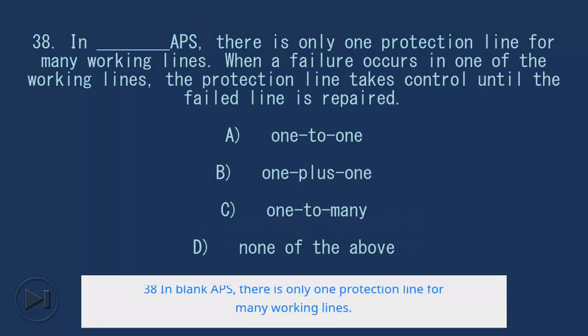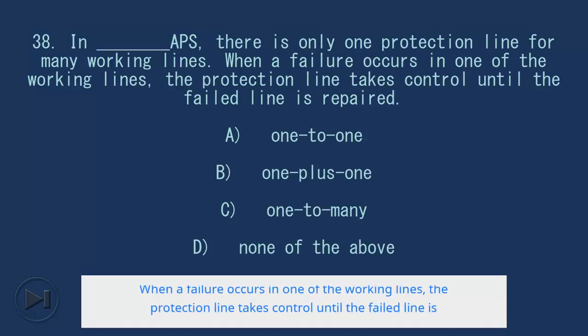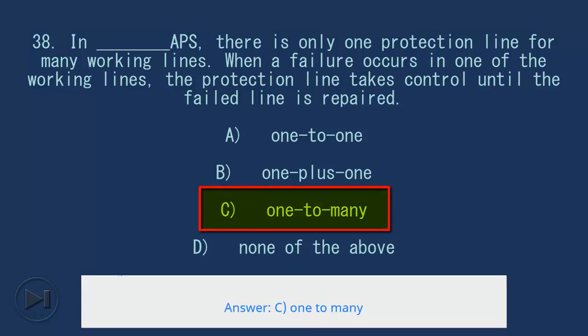38. In blank APS, there is only one protection line for many working lines. When a failure occurs in one of the working lines, the protection line takes control until the failed line is repaired. A. One-to-one, B. One-plus-one, C. One-to-many, D. None of these. Answer: C. One-to-many.